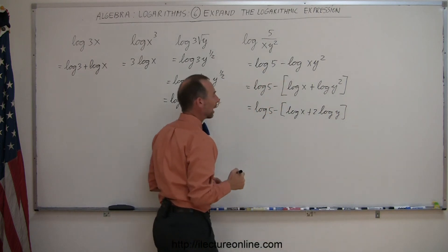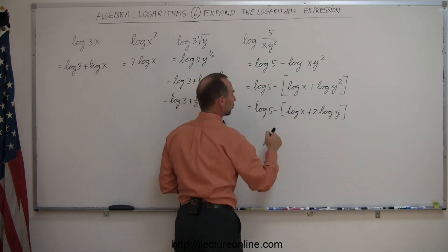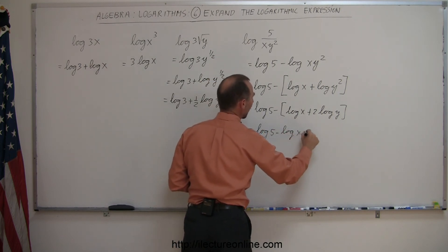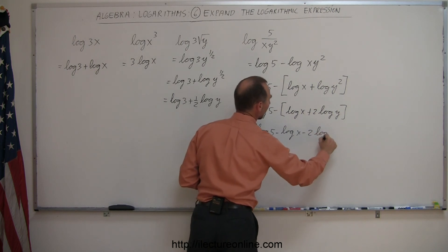And then finally get rid of the brackets and apply the minus to both parts in the bracket, so this is equal to log of 5 minus the log of x minus 2 times the log of y.